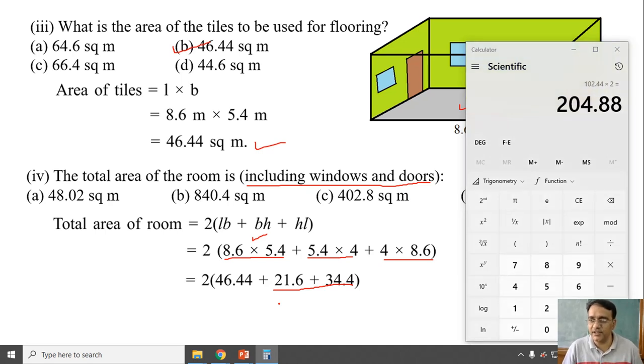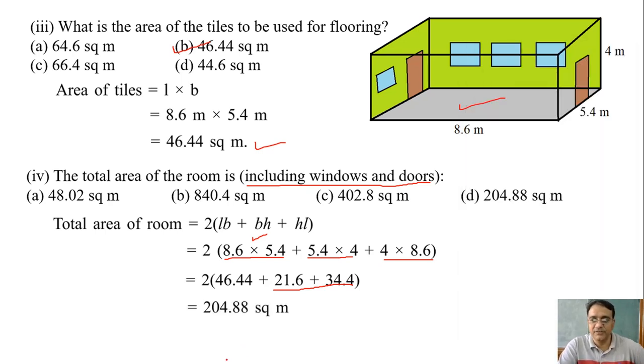So we are getting 204.88 square meter. So which option is the correct one? Option D. Option D. Right.